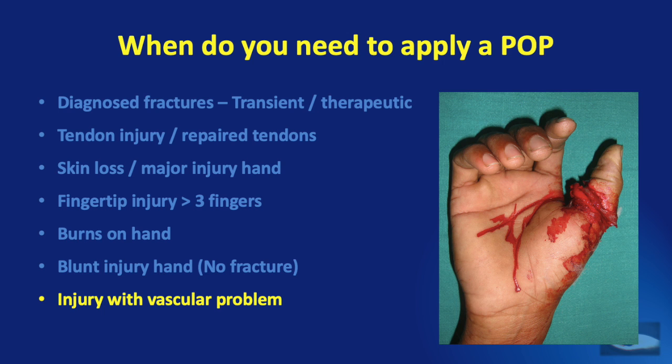And lastly when there is an injury to the finger or thumb or hand and there is a vascular problem as in this example where you can see that the thumb has been partially amputated and it looks very pale. So a POP needs to be applied before the definitive treatment is undertaken to prevent the shearing of the blood vessel which has been injured inside.